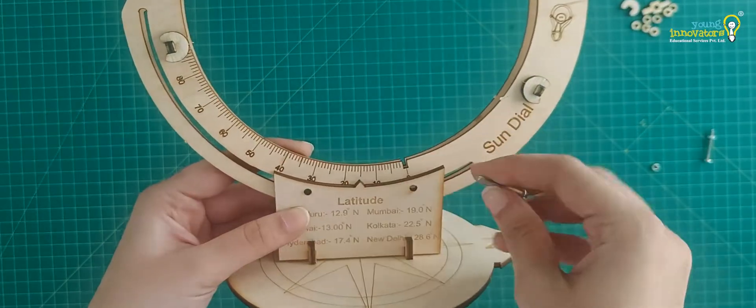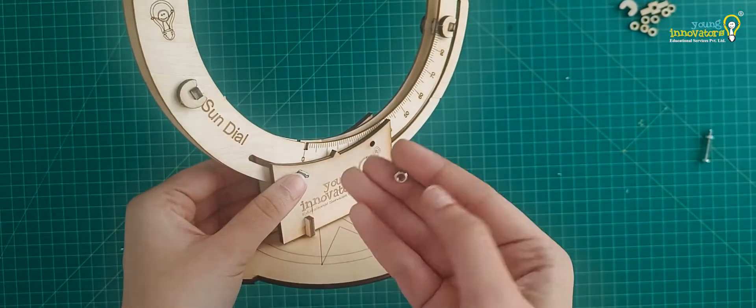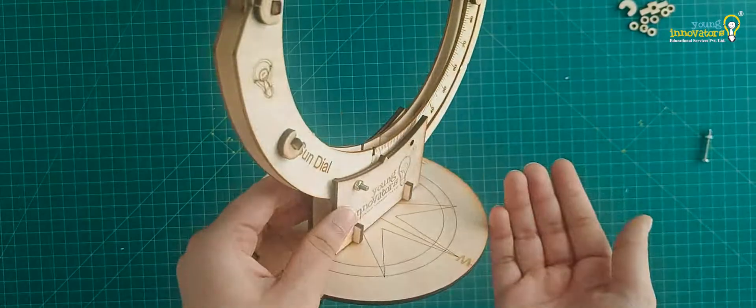Take two screws and pass them through the holes in the stands and through the arm plate. Lock the screws with the help of the nuts but not too tightly.